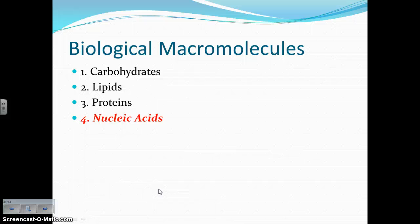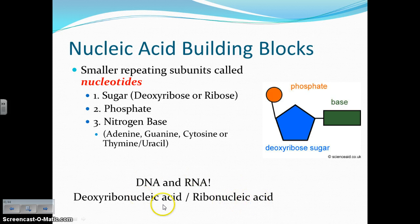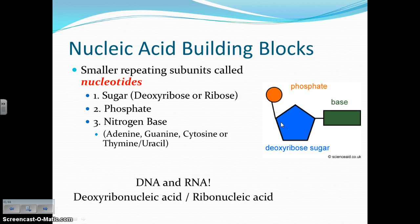Last up, we have nucleic acids — my favorite macromolecule. Nucleic acid, N-A — that's DNA and RNA. DNA stands for deoxyribonucleic acid, and RNA stands for ribonucleic acid. So these are your two nucleic acid macromolecules, DNA and RNA. The building block of nucleic acids is called a nucleotide. Nucleotides are made up of three things: a sugar — if it's DNA the sugar is deoxyribose, if it's RNA the sugar is ribose — a phosphate, and a nitrogen base. Those three things make up a nucleotide, and you add nucleotide plus nucleotide plus nucleotide to get a nucleic acid.